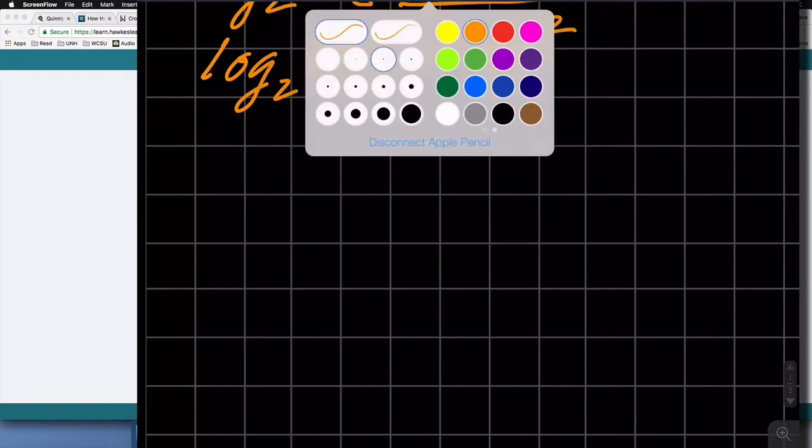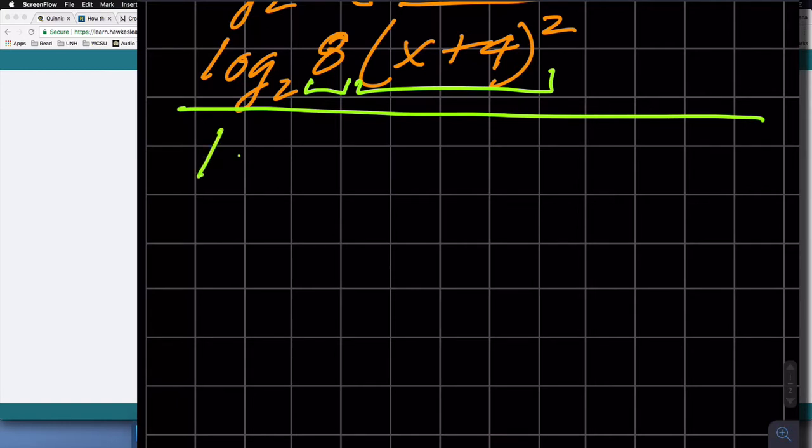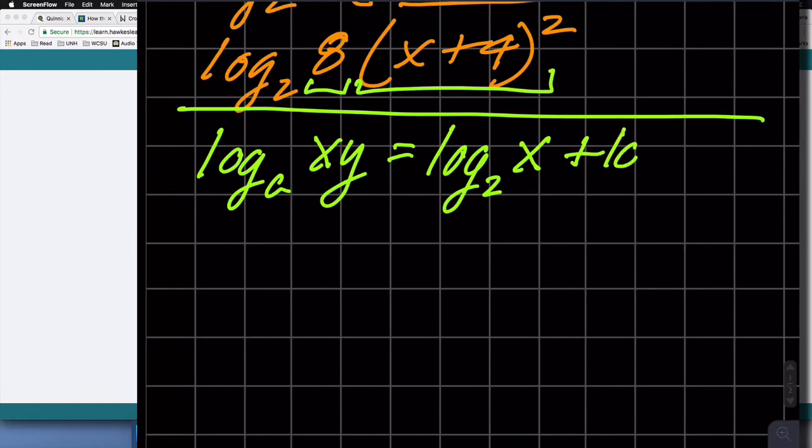Now, I have two factors that form a product of which I'm taking the logarithm of. And that lets me, or makes me think about, I was thinking about it before, as I mentioned, that there's a property where if I have the logarithm base a of x times y, I can rewrite that, or it's equivalent to logarithm of the same base of one factor plus the logarithm, same base, in this case two.